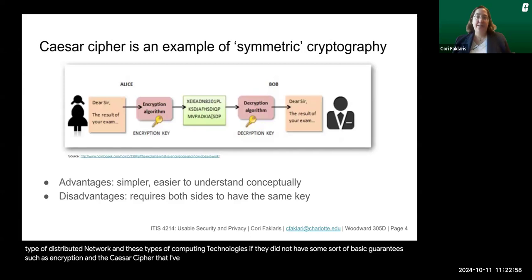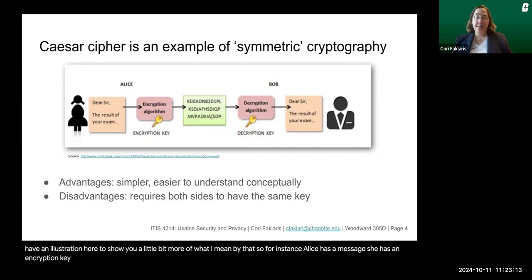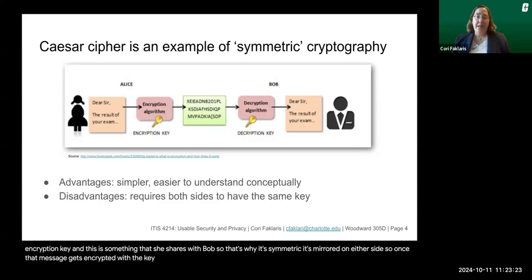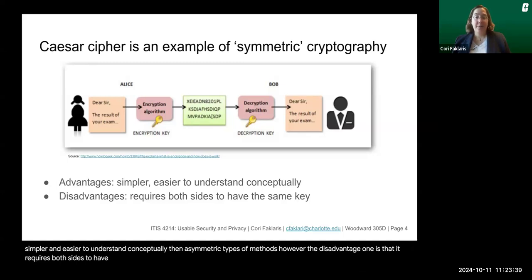The Caesar cipher is an example of symmetric cryptography. Once a message gets encrypted with a key, Bob can use the same key to decrypt it and read it. The advantages are that it's simpler and easier to understand conceptually than asymmetric methods. However, the disadvantage is that it requires both sides to have the same key, and that can open up some vulnerabilities.